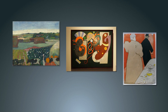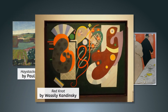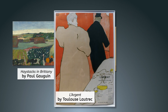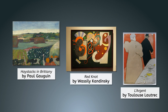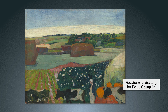Let's take a look at a few artworks. They include Haystacks in Brittany by Paul Gauguin, Red Knot by Wassily Kandinsky, and Largent by Toulouse-Lautrec. Each of these demonstrates a heavy use of the element of shape, specifically organic shape. In this painting, we see many rounded lump-type shapes representing the various fields and haystacks. There are also smaller flower-type shapes that adorn one of the bushes in the foreground. What other organic shapes do you see?